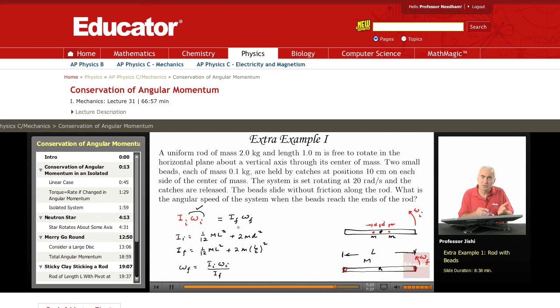This I times omega_i, which is given, and divide by this. If you're given numbers and you want to obtain a number, just calculate I_i, get a number for that, get a number for I_f, put them here, and omega_i is 20, and that gives you omega_f.